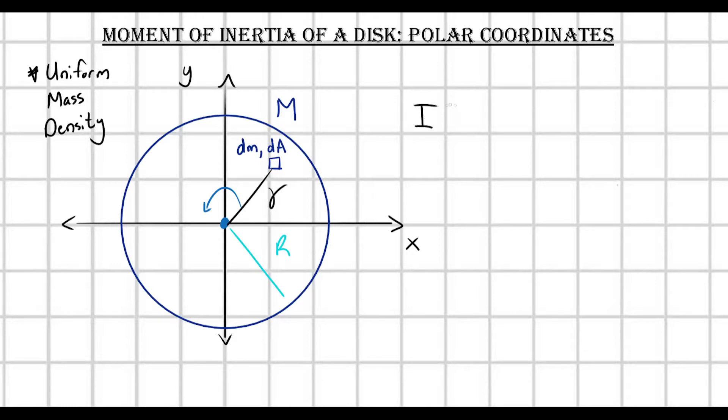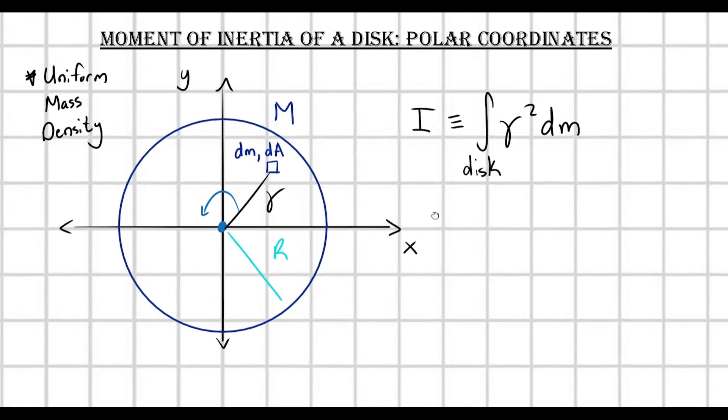And again, our moment of inertia, I, is just defined as the integral over our object, which in this case I'll say disk, of gamma squared, that distance from the axis of rotation, dm. So, next, I want to convert this integral into an actual usable form, something that I can actually integrate over this entire disk.